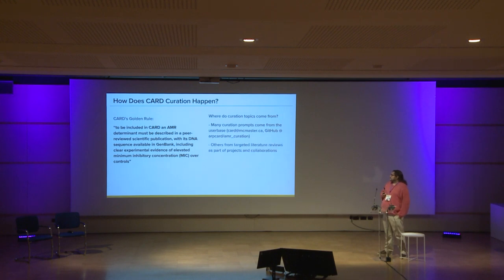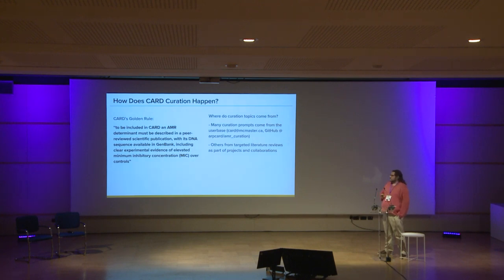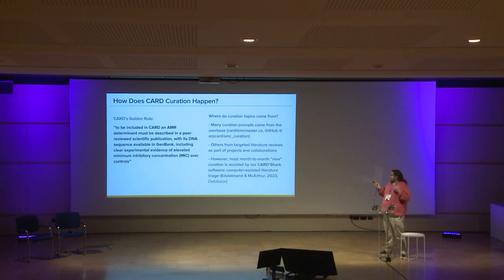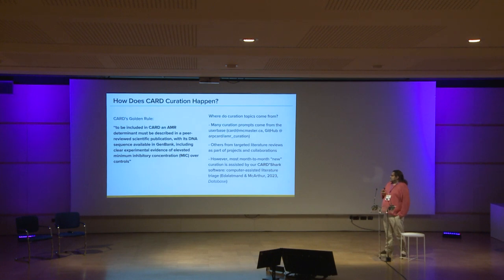Sometimes we do targeted literature reviews — for example, if we're approached by somebody who wants to do a deep dive on a particular pathogen like Shigella or Enterococcus, we'll review our database to make sure we're up-to-date. Most of our new month-to-month curation is assisted by a software called Card Shark, currently on version 3, which a master's student in our lab developed. It's a text mining and machine learning algorithm that ranks literature for us and guides curators on where to look first. It reviews all the literature and identifies what's most likely relevant to CARD — and the citation appeared online just this week.